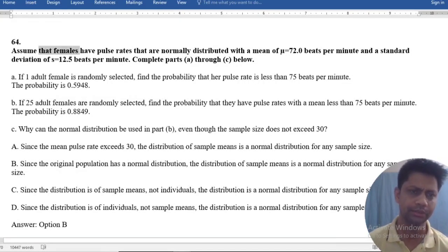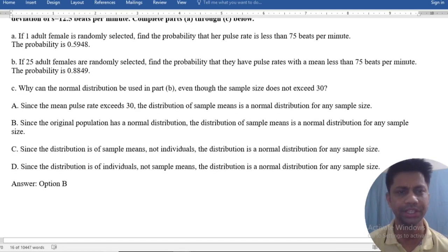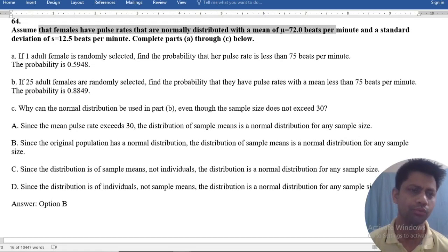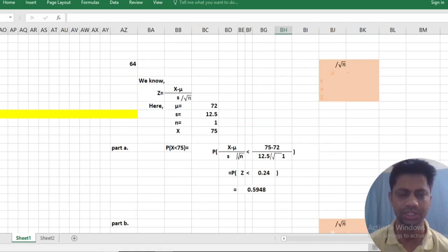Assume that females have pulse rates that are normally distributed with a mean of mu equals 72 beats per minute and standard deviation of 12.5 beats per minute. Complete parts A through C. If one adult female is randomly selected, the pulse rate is 75 per minute. What's the probability? Our solution is here.